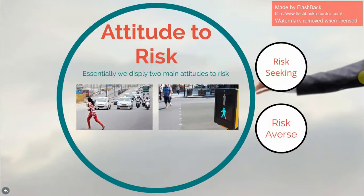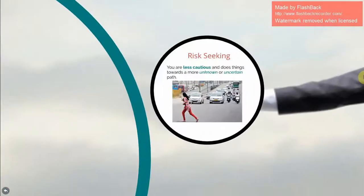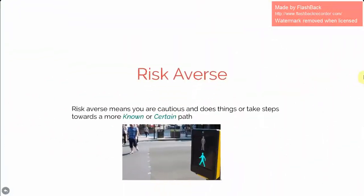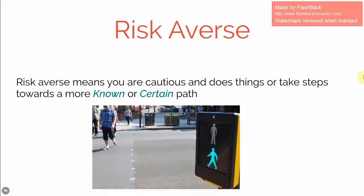There are two types of attitude to risk. Firstly, risk averse — this means you are very cautious and take steps towards a more certain path. Secondly, risk seeking — this means you are less cautious and take steps towards a more unknown or uncertain path.